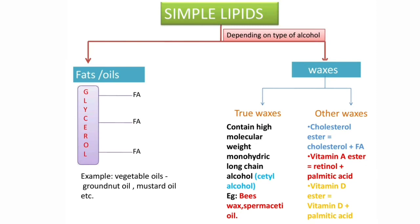Simple lipids are a type of lipids which contain only alcohol plus fatty acids. Whatever lipids contain only alcohol and fatty acids and nothing else, we call them simple lipids. Depending on the type of alcohol present, we can subclassify simple lipids into fats and oils, and second, waxes.